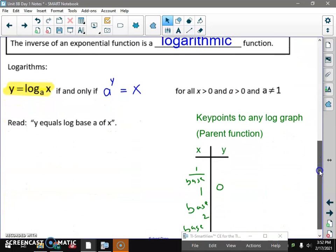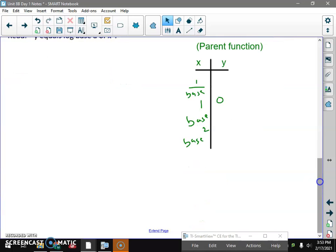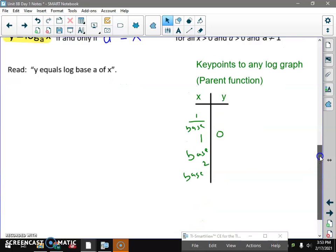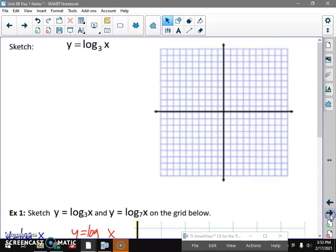Key points in every log function are, every log function, 1, 0, base 1, base squared 2, 1 over base, negative 1. Again, it's the inverse, it's the switching of x and y's with the exponential function. So let's graph a couple more. We did a basic one. Now let's do this one.